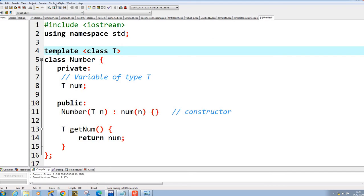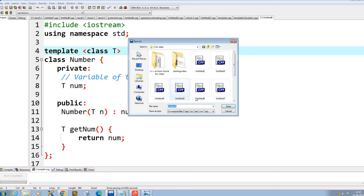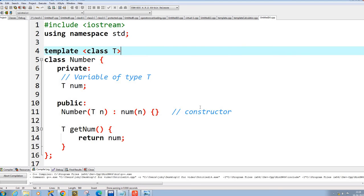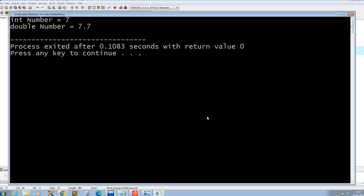So now if I execute this program by, let's say, 14 or something, you can see that for integer it will print 7, otherwise it's 7.7.